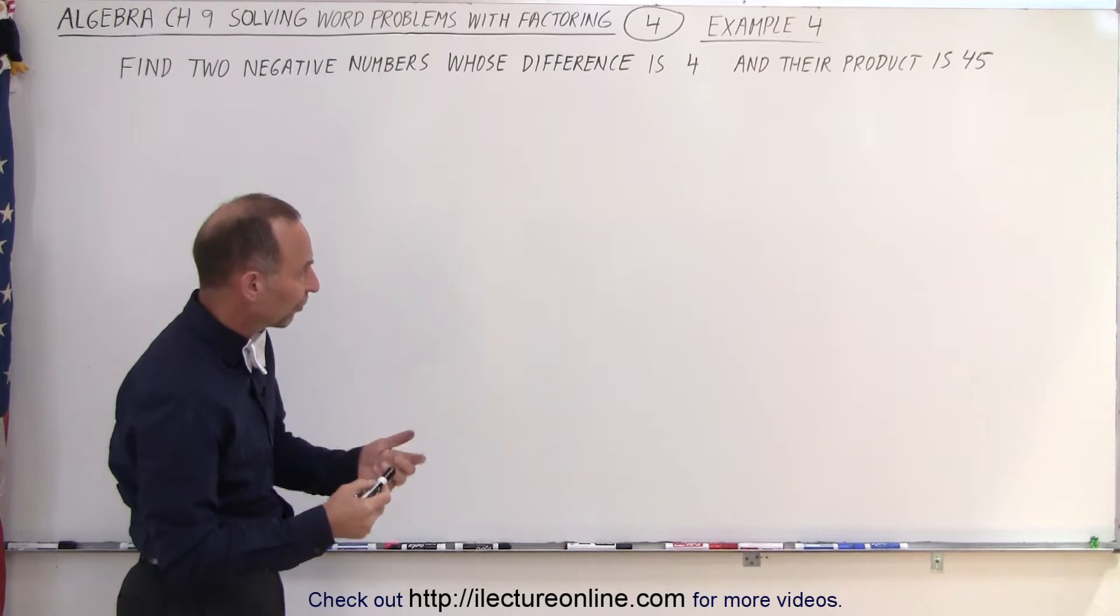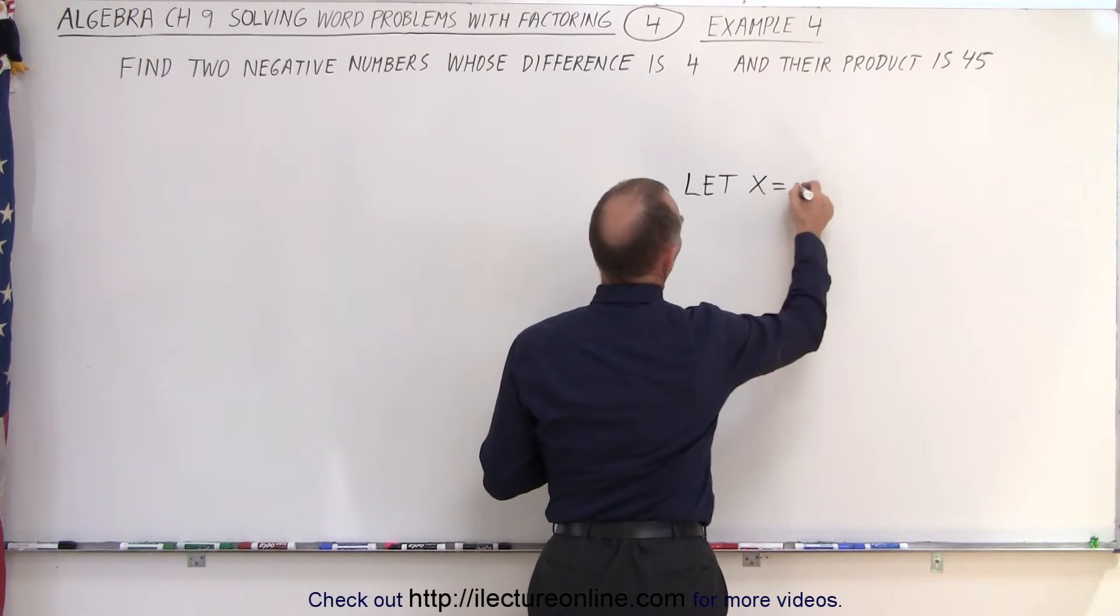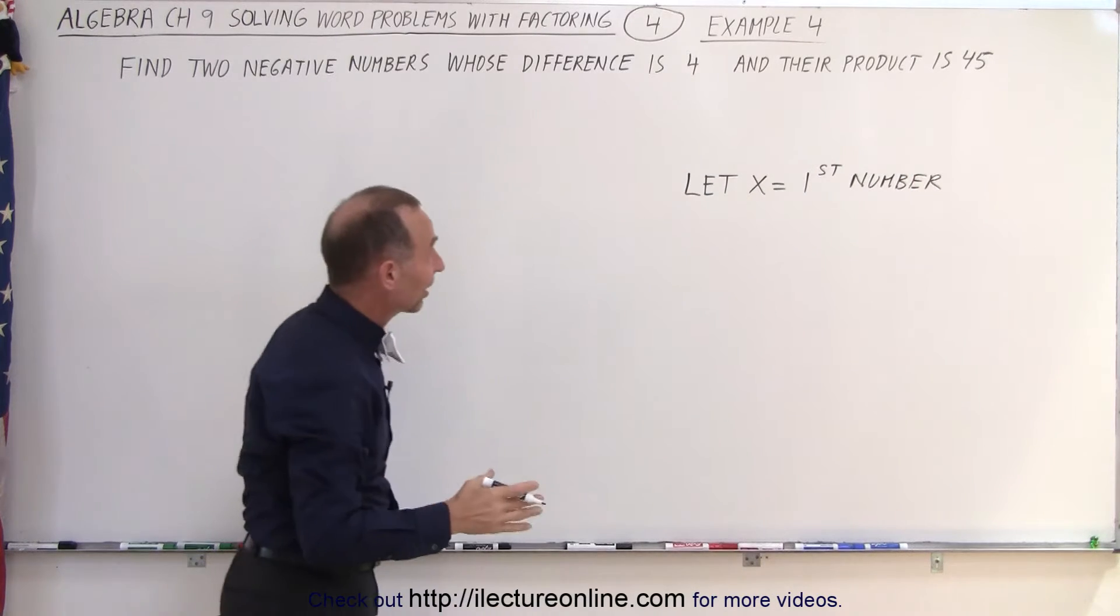Let's say that we're going to define the first number as x. Let x equal the first number. Then how do we describe the second number?